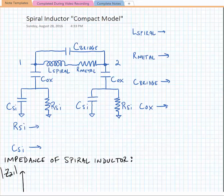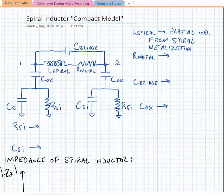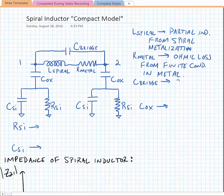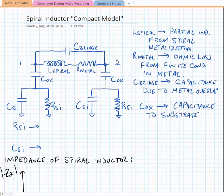So if we examine this a little bit closer, the inductance L-spiral is the partial inductance from the spiral metalization. R-metal represents the ohmic loss from finite conductivity in the metal. C-bridge represents capacitance due to metal overlap. C-aux represents the capacitance to the substrate. Finally, we have the term R-silicon, R-si, which is ohmic loss due to eddy currents.